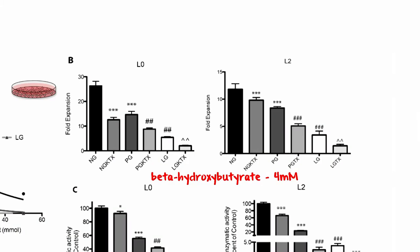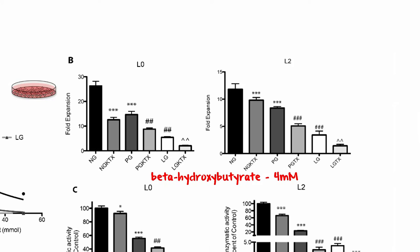She then continued the tissue culture studies adding elevated ketones. She used beta-hydroxybutyrate, determined an EC50, and used 4 millimolar — slightly high for humans but within the ballpark. She combined ketone treatment with changes in glucose levels and consistently found that adding ketones produced a further reduction in the fold expansion of tumor cells. This was consistent across all three glucose levels, with the best effect on low glucose plus ketones — essentially mimicking the ketogenic diet in tissue culture.